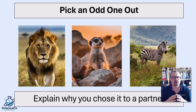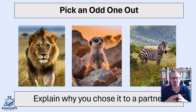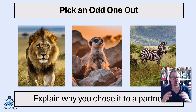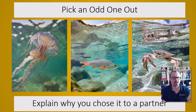Odd one outs are always a useful way of getting at misconceptions and seeing what children know about a topic area. Try to pick them where there is no right or wrong answer - they all could be the odd one out as long as a valid reason is given. For example, we've got a lion, a meerkat, and a zebra. Which is the odd one out? None of these are wrong - they all could be if you give the right reasons. Get the children discussing it, explaining their reason to a partner, then share the good ones back. You could also have same and different activities with animals, and ask children to explain why one is different.